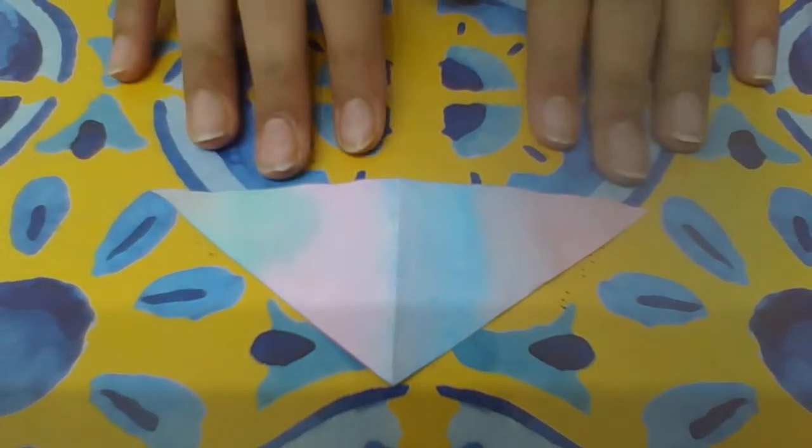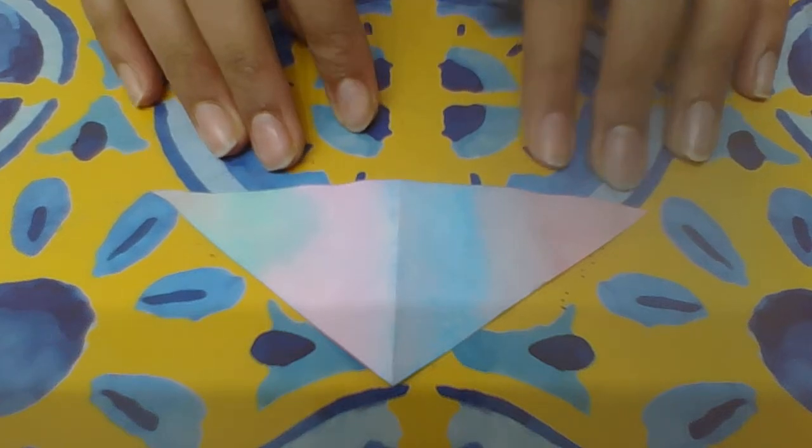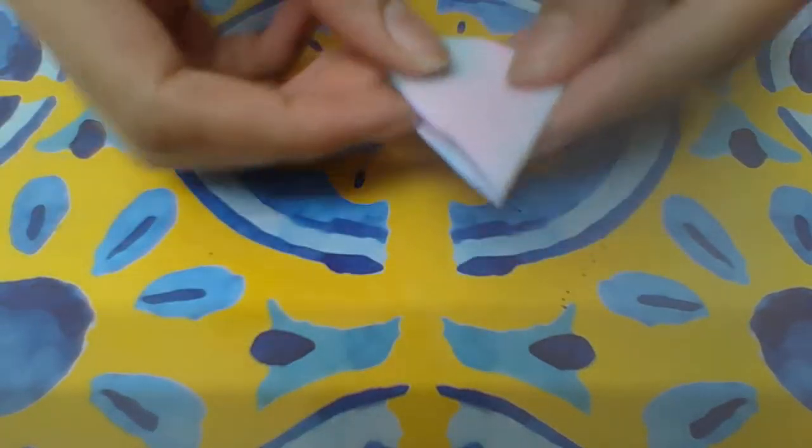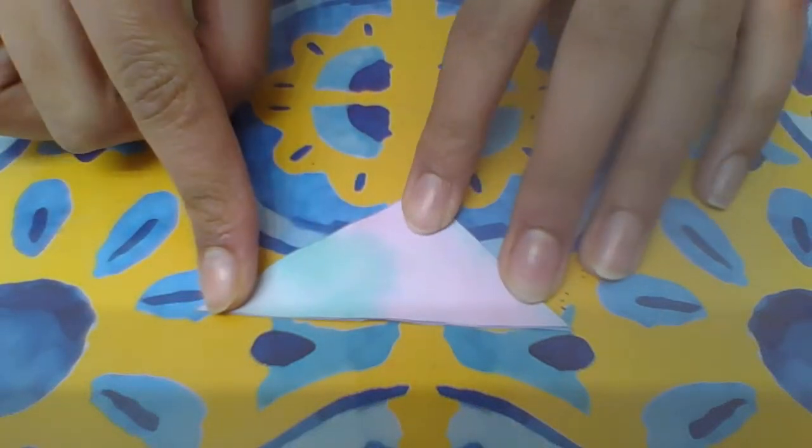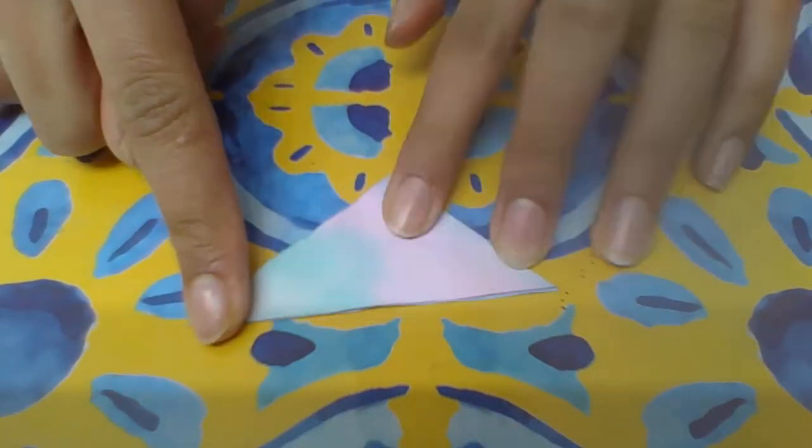So now I'm so excited to turn this into the bookmark. We're going to start by folding it into the triangle that we had when we cut and got the triangle shape, basically.